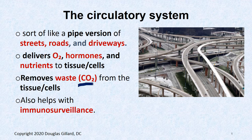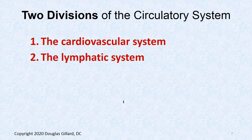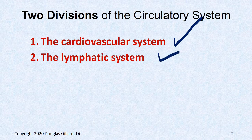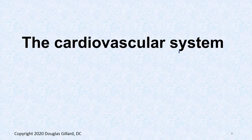We also use the circulatory system to deliver hormones, and to remove the waste that cells make — mainly CO2, but other nitrogenous wastes as well. Immunological surveillance is another function: a bug gets into your finger, into the blood, and the immune system sees it and ramps up a response. There are two divisions of the circulatory system: the cardiovascular system, which we'll mainly focus on, and the lymphatic system.